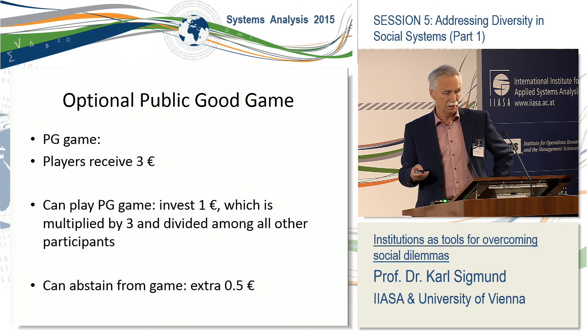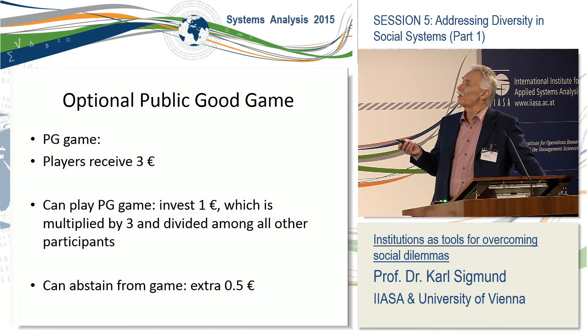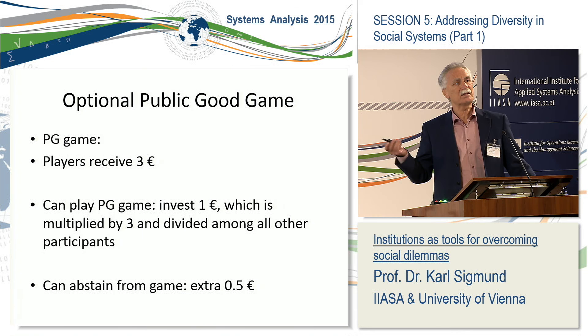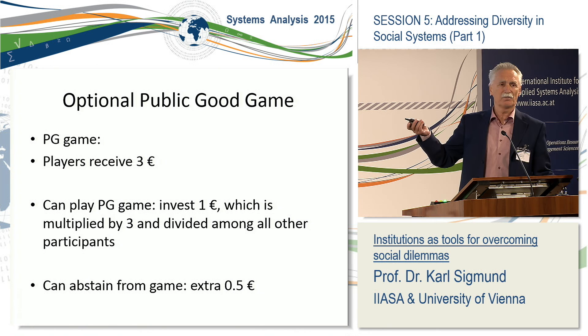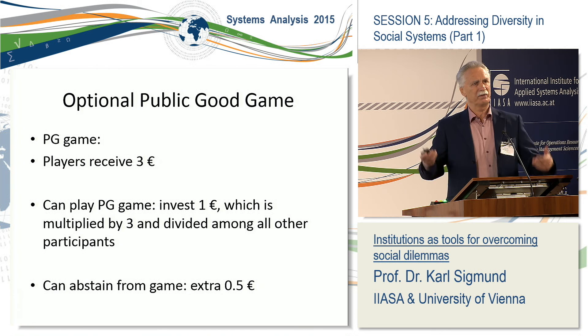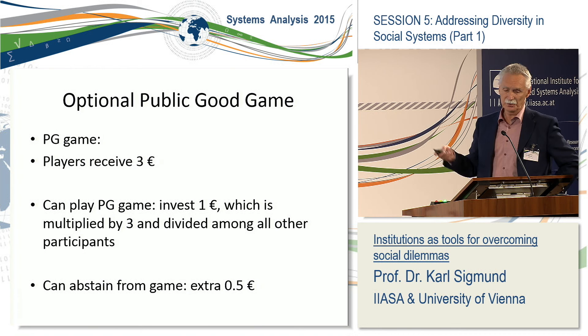We have the optional public good game. Suppose each player always receives at the beginning 3 euros and can decide to invest, for instance, 1 euro, which is multiplied by 3 and divided amongst all other participants. We also assume that players can abstain from the game. In that case, if they don't want to enter this common good game, they get an extra 50 cents. The reason for this is motivated by the theoretical analysis, though I have no time to enter on this point.